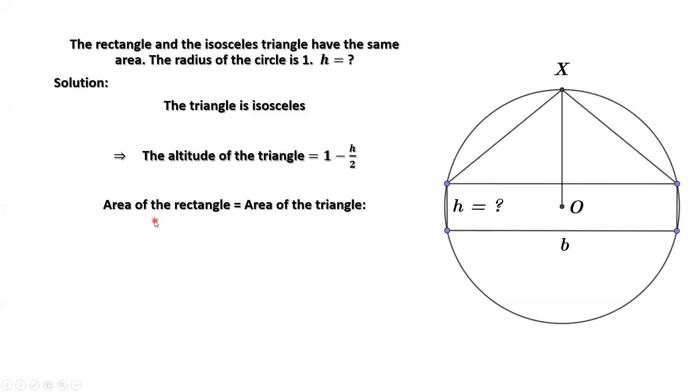This is the given condition. The area of the rectangle equals the area of the triangle. The area of the rectangle equals h times b. The area of this triangle equals one half times the base, which is b, times its height, which is one minus half h.